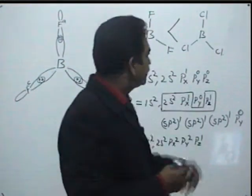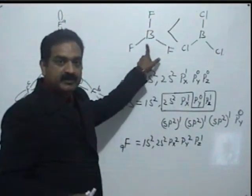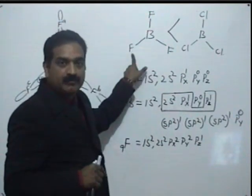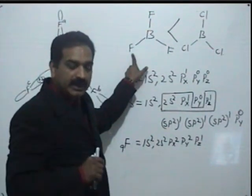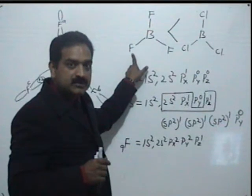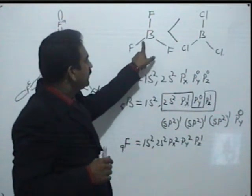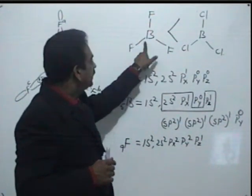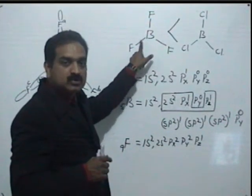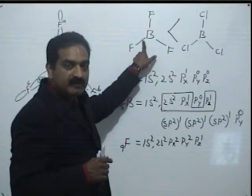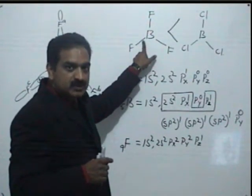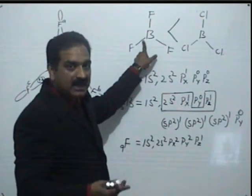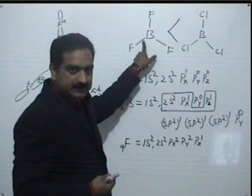Now, in BF3, boron is bonded to fluorine which is more electronegative. Since fluorine is more electronegative, the shared electrons between boron and fluorine are attracted towards fluorine more. So this boron becomes more electron deficient. That is why we would expect BF3 to be a stronger Lewis acid.